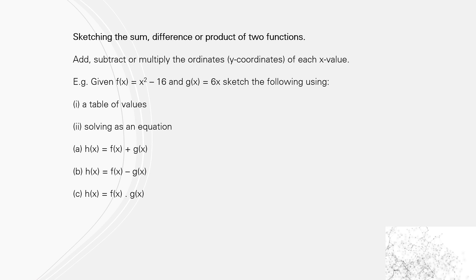We're going to look at f(x) = x² - 16, which we know is a parabola, and g(x) = 6x, which is a straight line. We're going to sketch using first method will be a table of values, and a second method would be solving as an equation. For the first one we're going to do the sum, for the second one we're going to do the difference, and for the third one we're going to do the product.